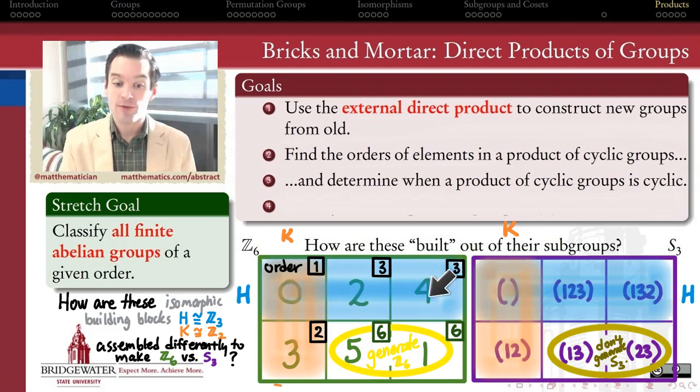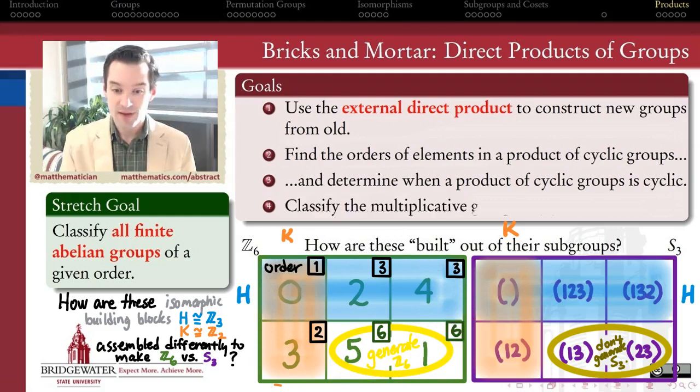When I combined them together to form this group of order 6, this whole group of order 6 turned out to be cyclic. But that wasn't the case over here for S3. So in what circumstances is a product of cyclic groups going to be a cyclic group?